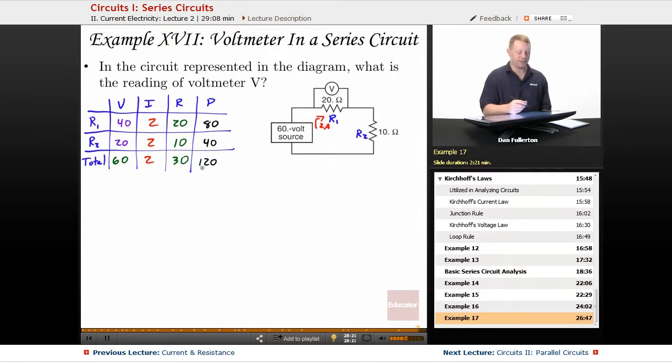So, what was the question it asked? What's the reading of voltmeter V? Well, if we look up here at V, V is measuring the potential difference across R1. So, I come down to my VIRP table, and I find that the potential difference across R1 is 40 volts.